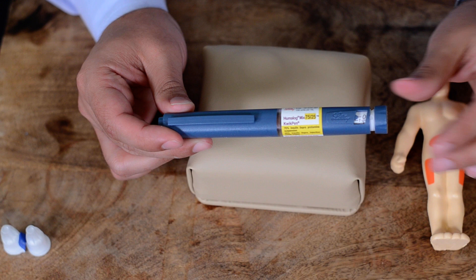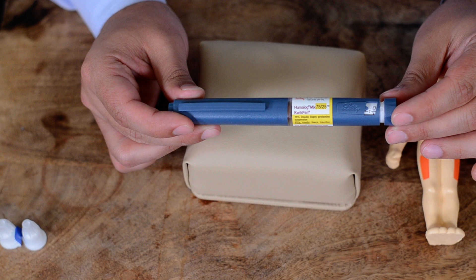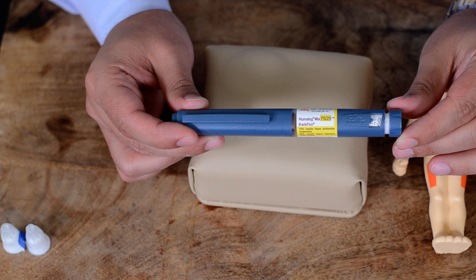The 25% is insulin lispro which is a fast-acting insulin. The action starts at 15 minutes and the overall action disappears in 3 to 4 hours. So you have two insulins mixed together.